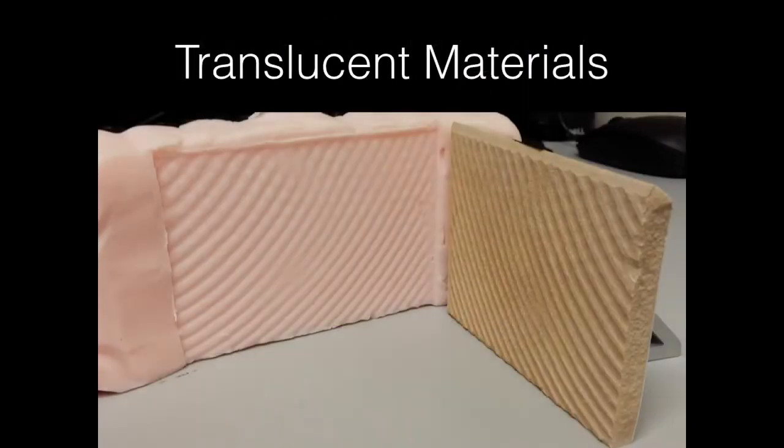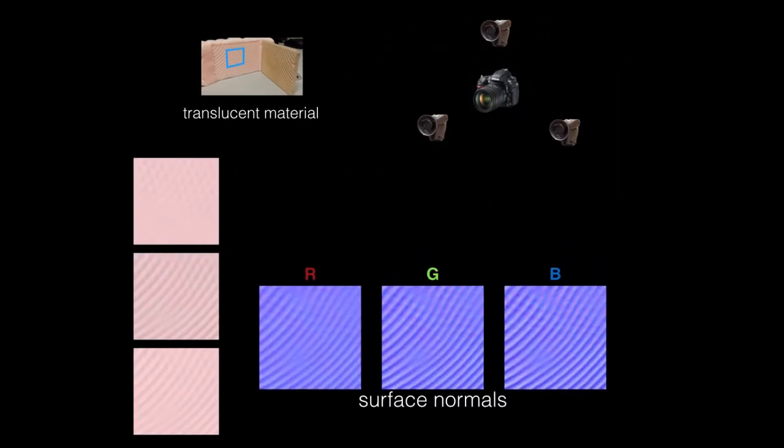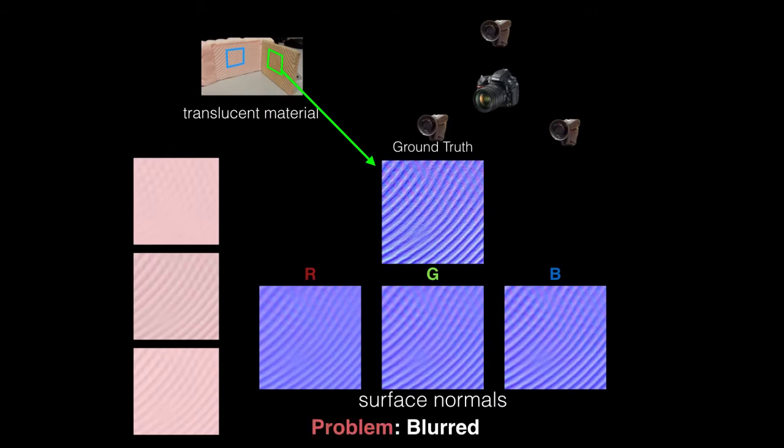Naively applying classic photometric stereo to translucent materials can still estimate the surface normals. However, compared to the ground truth, the naively estimated surface normals are blurred to varying degrees, depending on color channel.